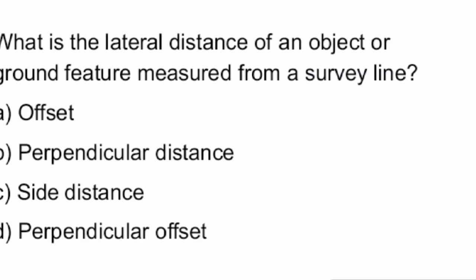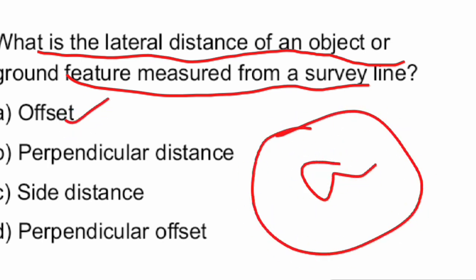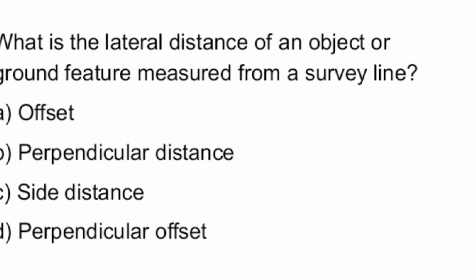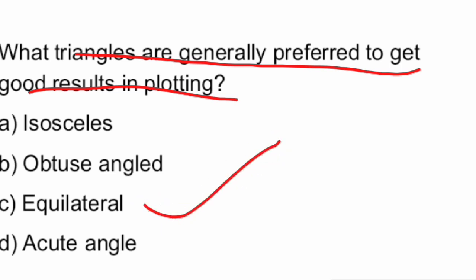Next question: what is the lateral distance of an object or a ground feature measured from a survey line? The answer is the offset. Next, what triangles are generally preferred to get good results in plotting? Equilateral triangles are preferred to get good results in plotting.